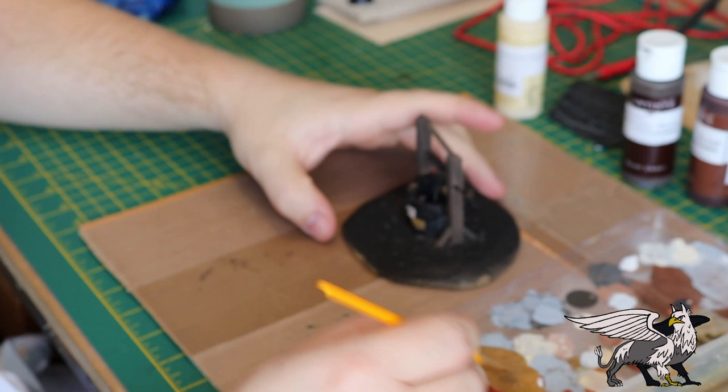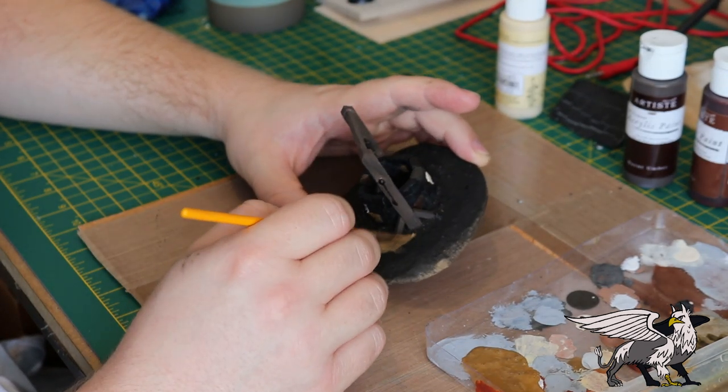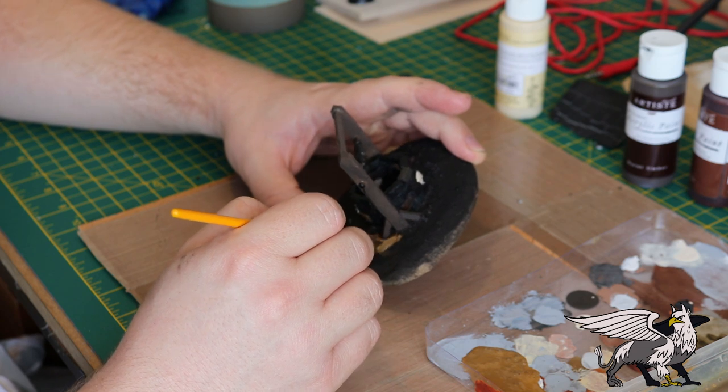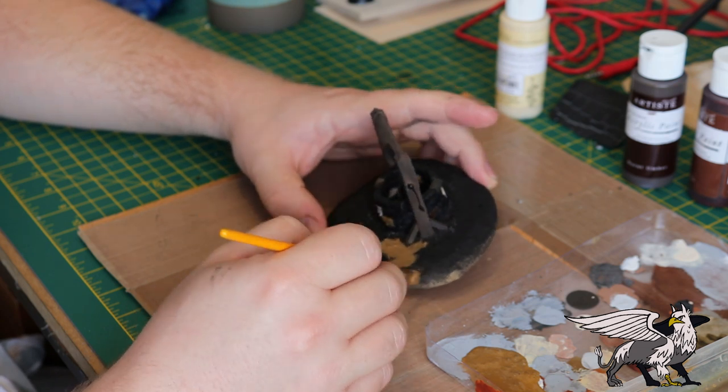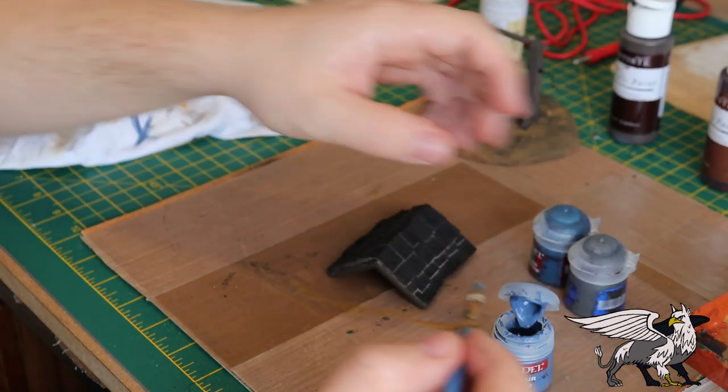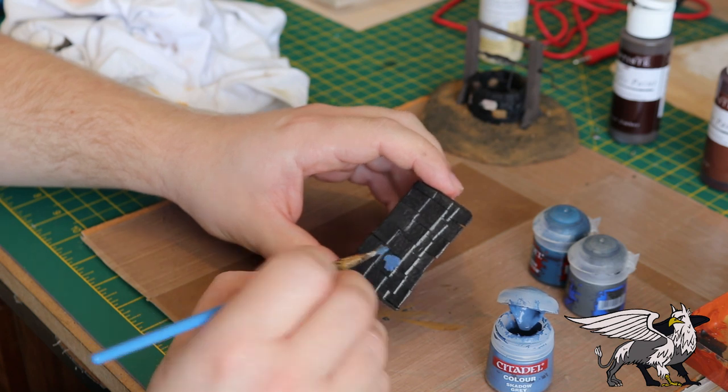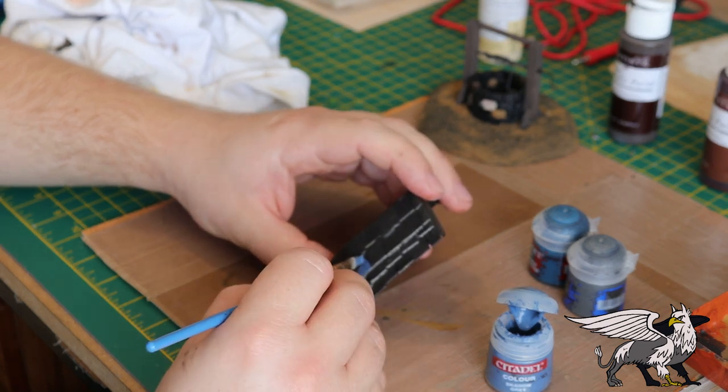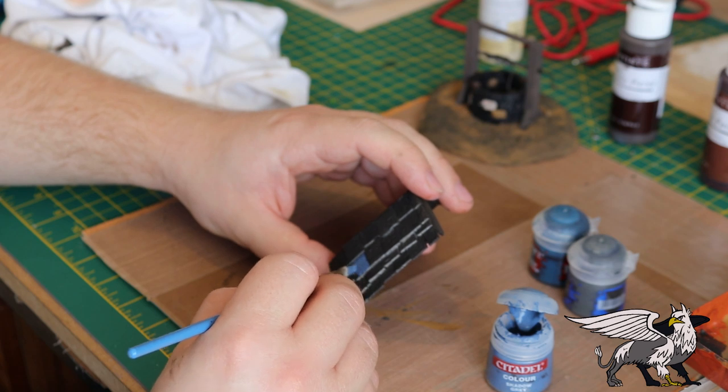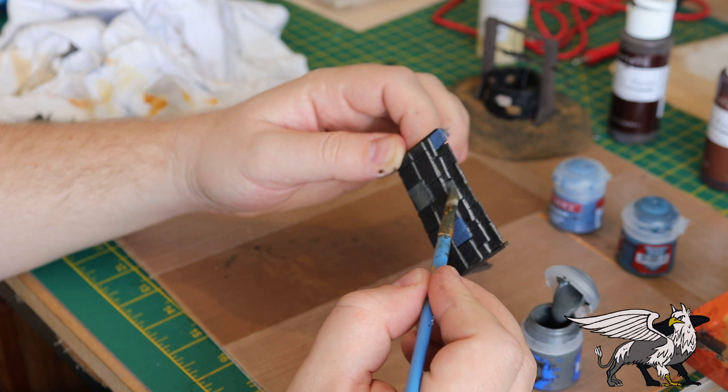And then I turned my attention to the base, which I used some Game Color Earth, very watered down, and just covered the whole thing. Didn't want to use too much of this so I watered it down fairly heavily. And then I moved on to the roof and I used slate-like colors, some grayish blues and things, just to pick out some of the slate and give it some extra depth.